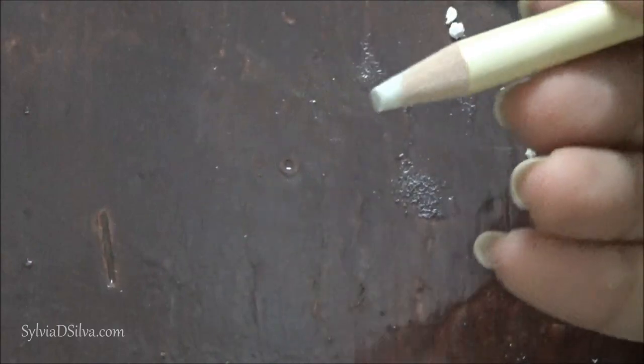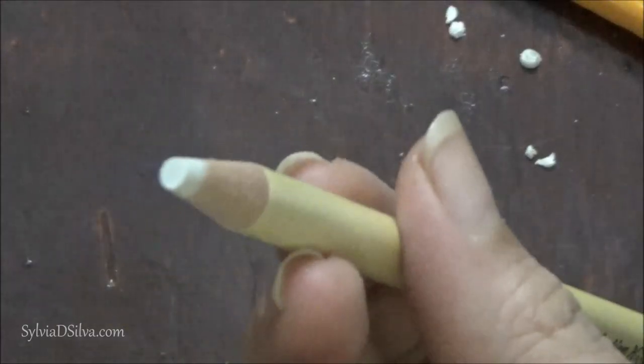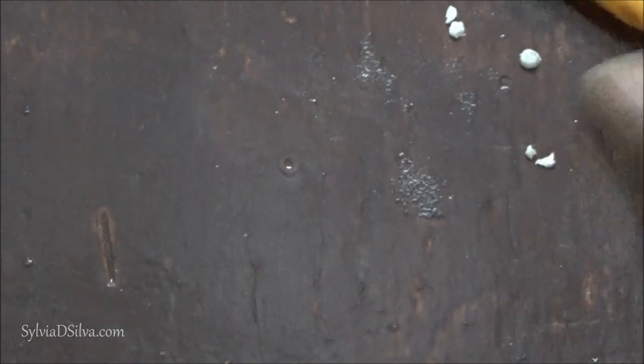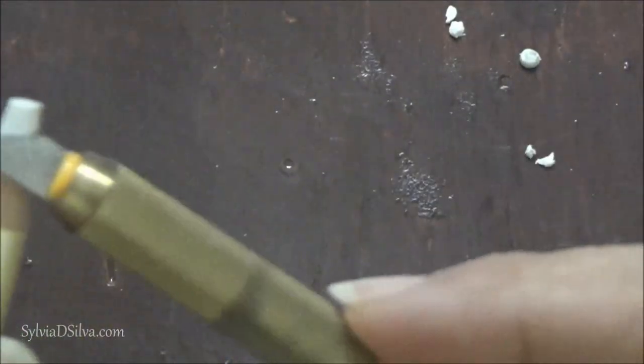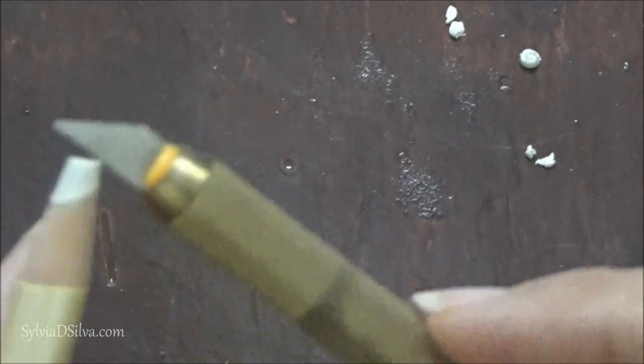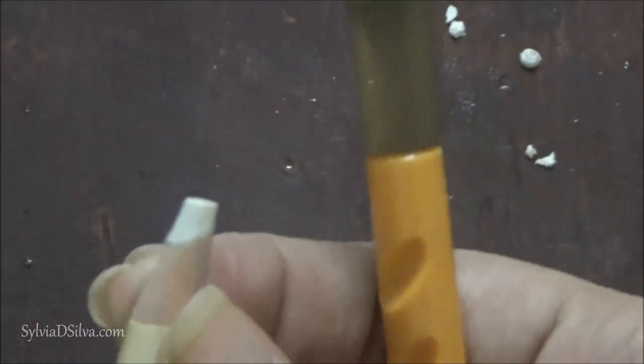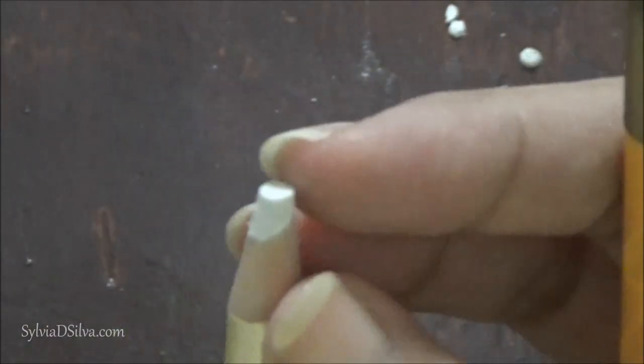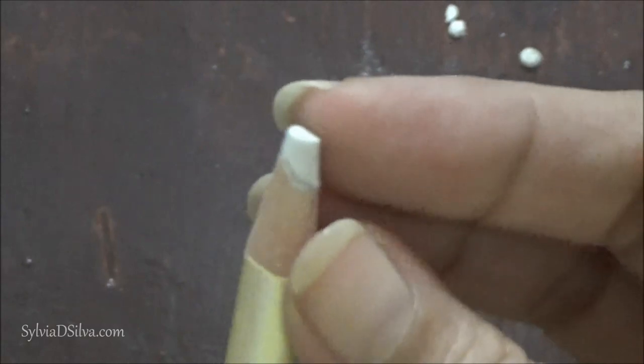All right, so that is it. That's how you use it. If you prefer a fine point, you can use the craft knife and sharpen it this way like you would sharpen any graphite pencil and make a fine point to use it that way. But I recommend cutting it flat so you can use the edges like that for erasing.